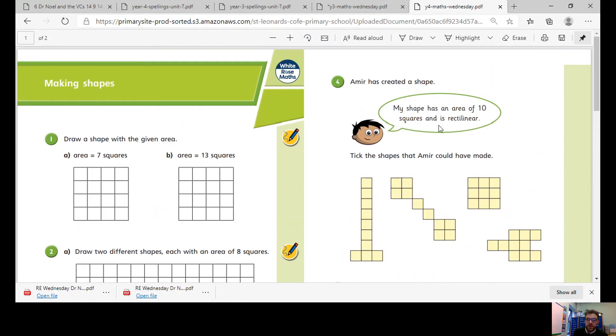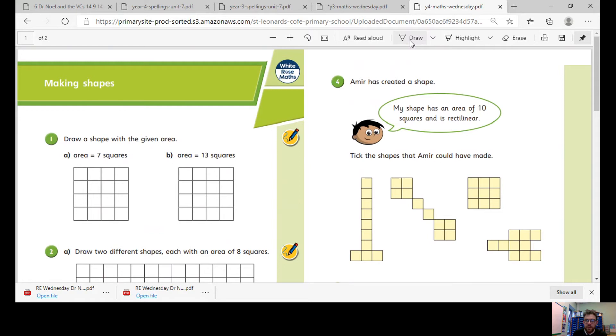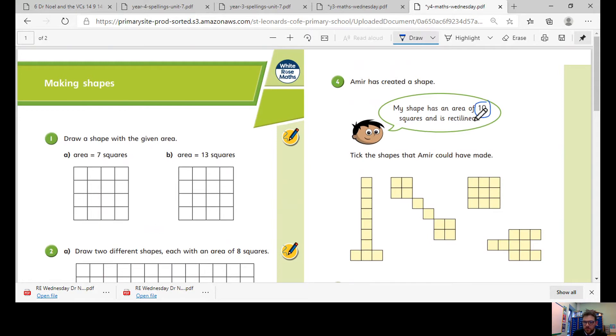Amira has created a shape. My shape has an area of 10 squares and it is a rectangle. Tick the shape that Amira could have made. So think of the clues. So clues are 10 squares and is rectangular. See which one you think it could be.